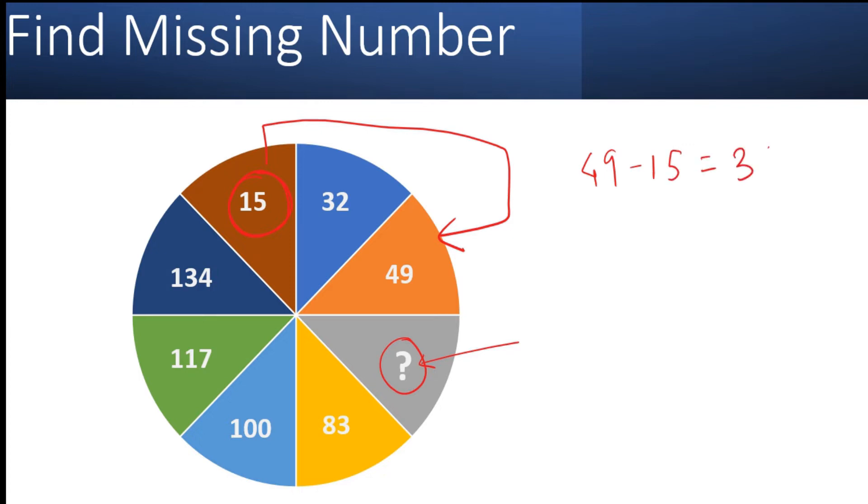If you see 15 and 49, the alternate value, we are skipping one value, then the difference is 49 minus 15 is 34.